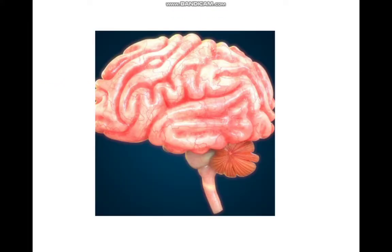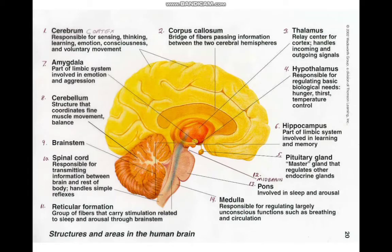The brain has certain parts: the forebrain, the hindbrain, and the midbrain. Let's talk about the embryology of the nervous system.